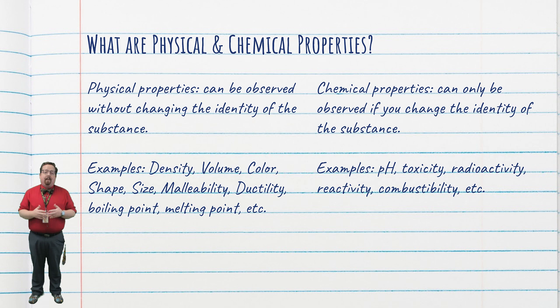Chemical properties, on the other hand, can only be observed if you change the identity of the substance. In other words, your substance must undergo a chemical change in order to observe a chemical property. Some chemical properties are pH, which tells us whether it's an acid or a base, toxicity, which means is it toxic to living organisms, radioactivity, does its nucleus release particles, reactivity, what other substances does it react with, and combustibility, will it catch fire.